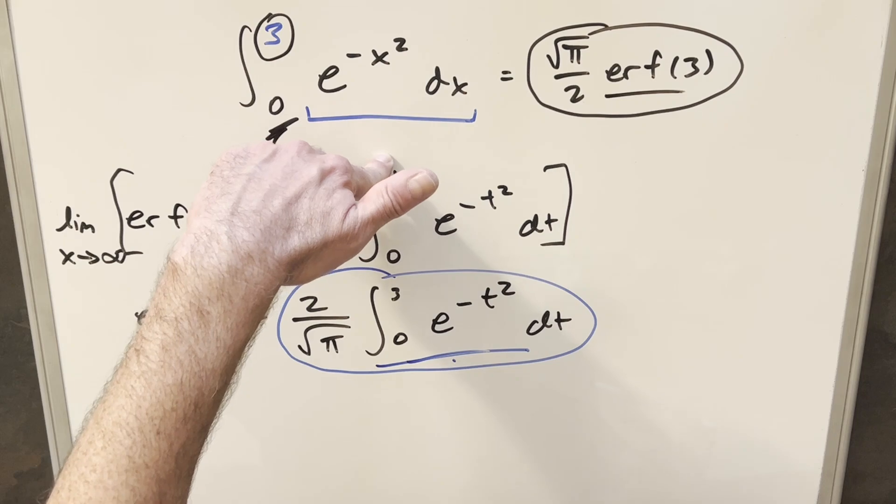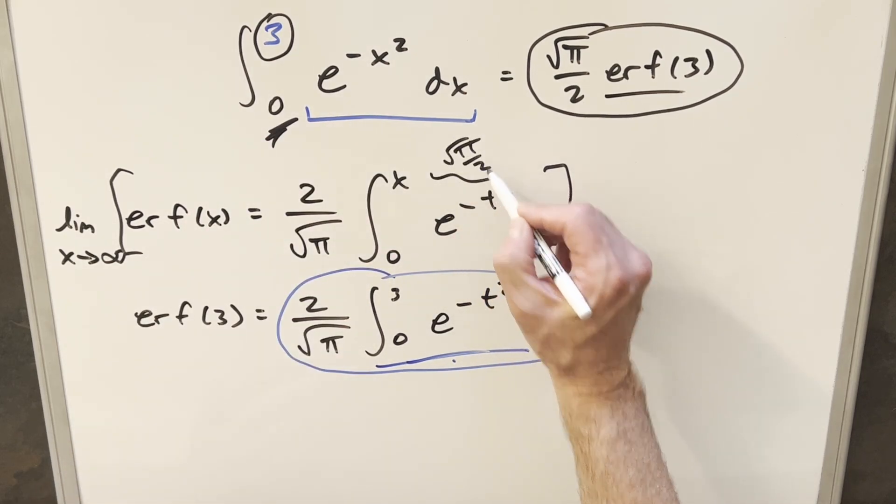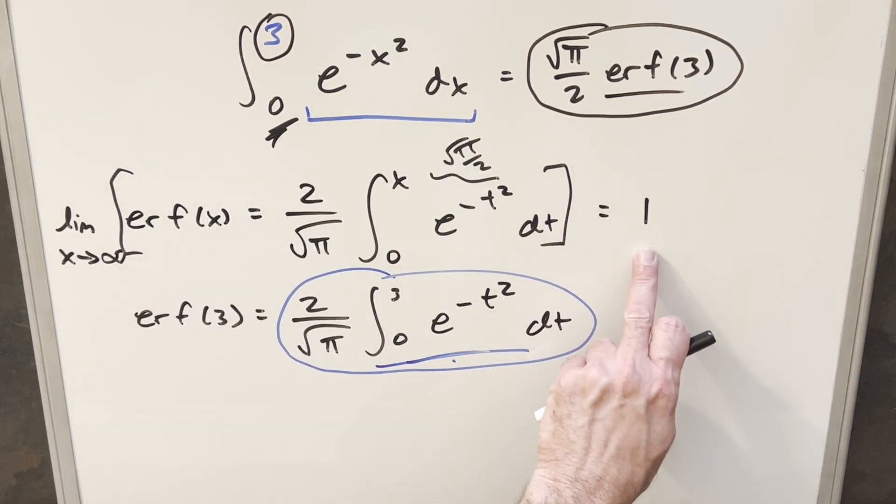So if you have the x here going to infinity, again, this is our Gaussian integral, square root of pi over 2. 2 times square root of pi times square root of pi over 2. This limit is just going to be 1. So we have this defined so that this comes out to 1.